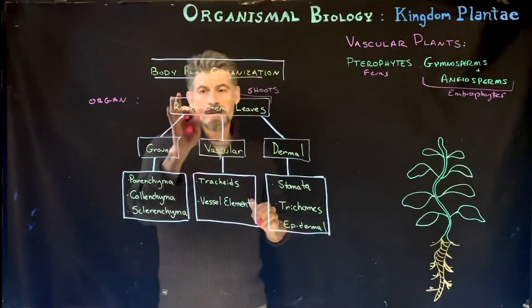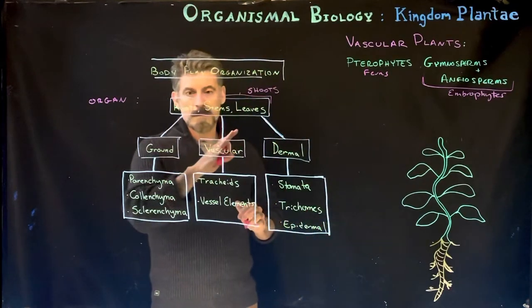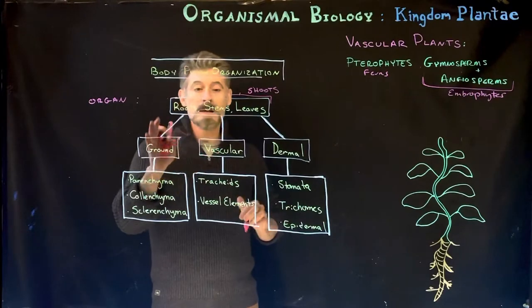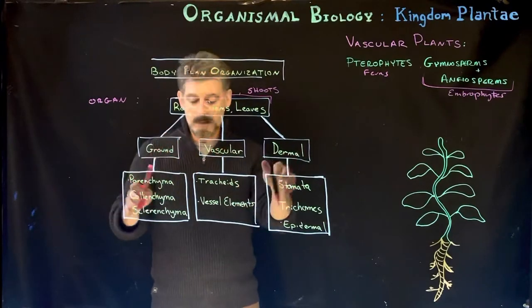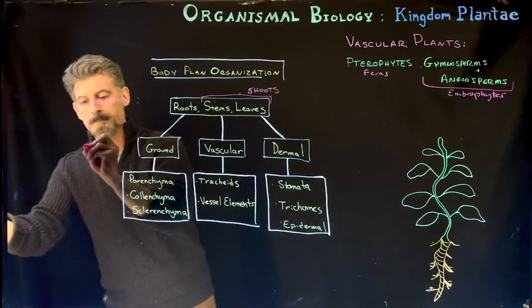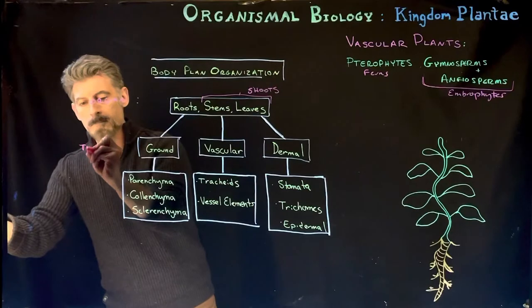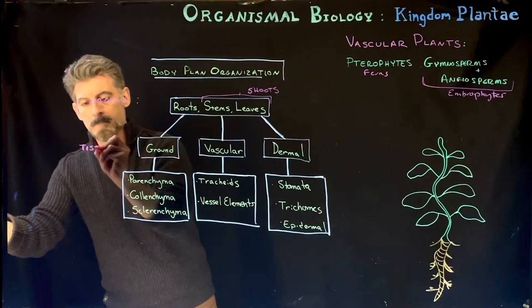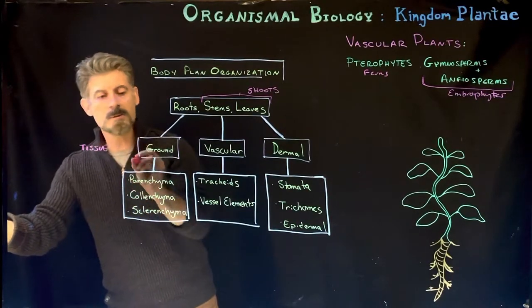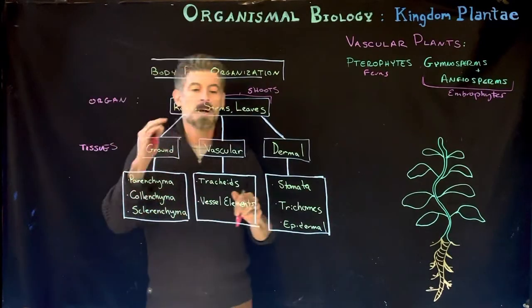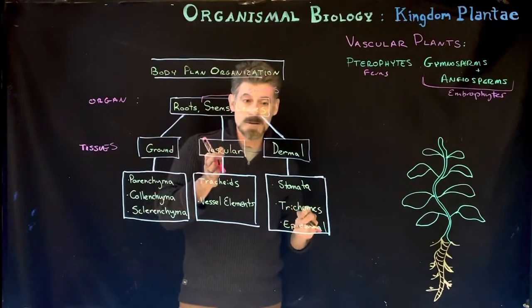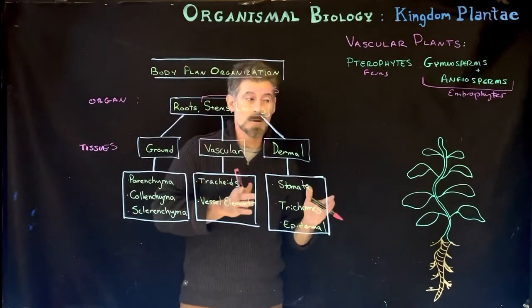Each of these — roots, stems, and leaves — are made up of three types of tissues: ground tissue, vascular tissue, and dermal tissue.